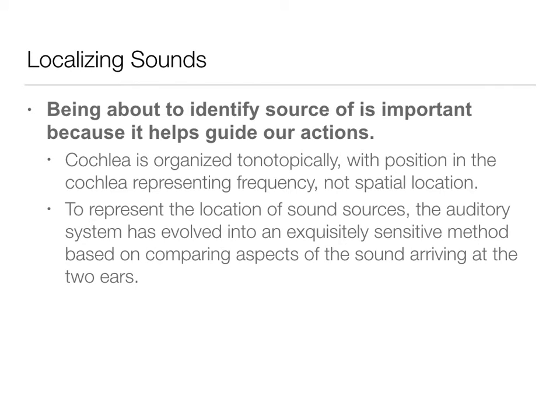For figuring out where sounds are coming from, we've evolved some pretty exquisitely sensitive mechanisms — because of the two ears. So because we have two ears, we can use that information to figure out where sounds are. First we'll talk about the terms we use to describe where sounds are in our space, and then how the brain processes that information.